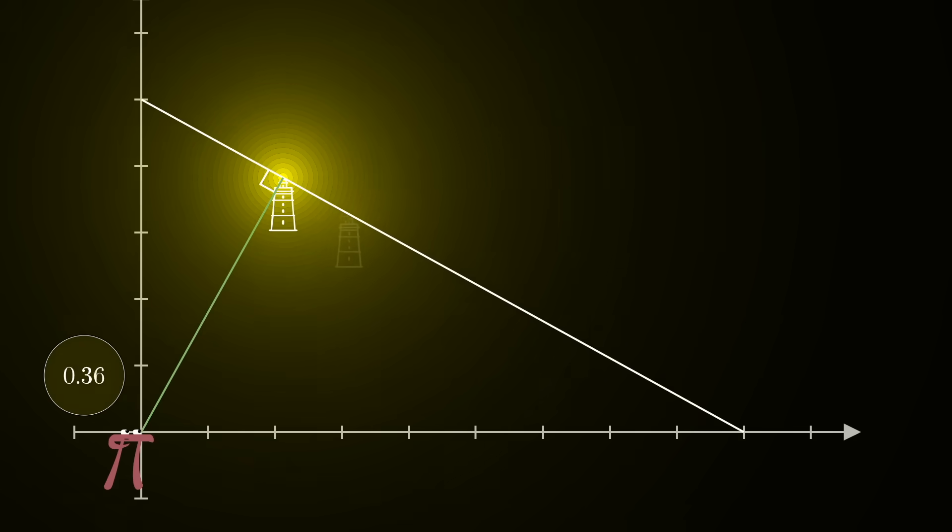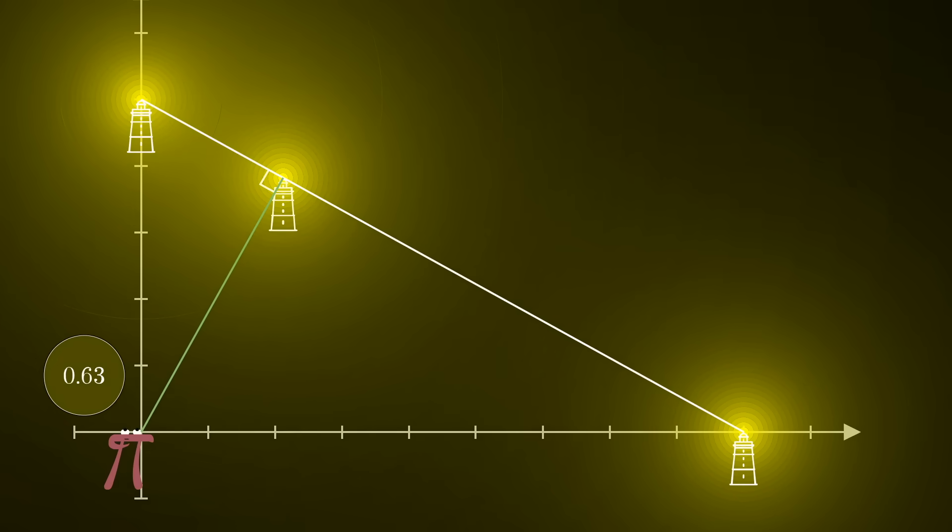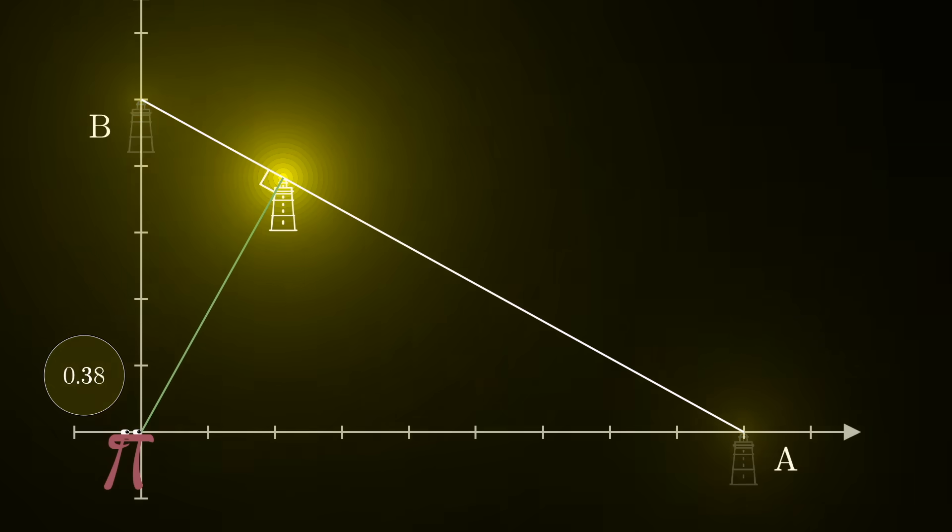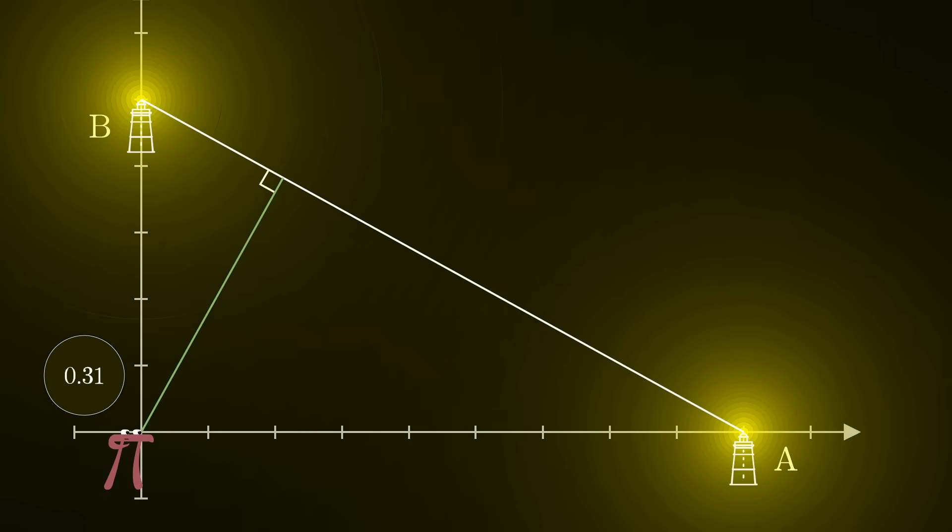It turns out—and you'll see why this is true in just a minute—the brightness that the observer experiences from that first lighthouse is equal to the combined brightness experienced from lighthouses a and b together.